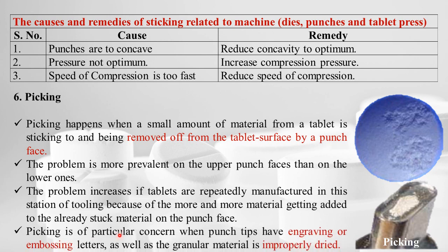Picking is of particular concern when punch tips have engraving or embossing — identification markings on the tablet. It is also problematic when granular material is improperly dried.